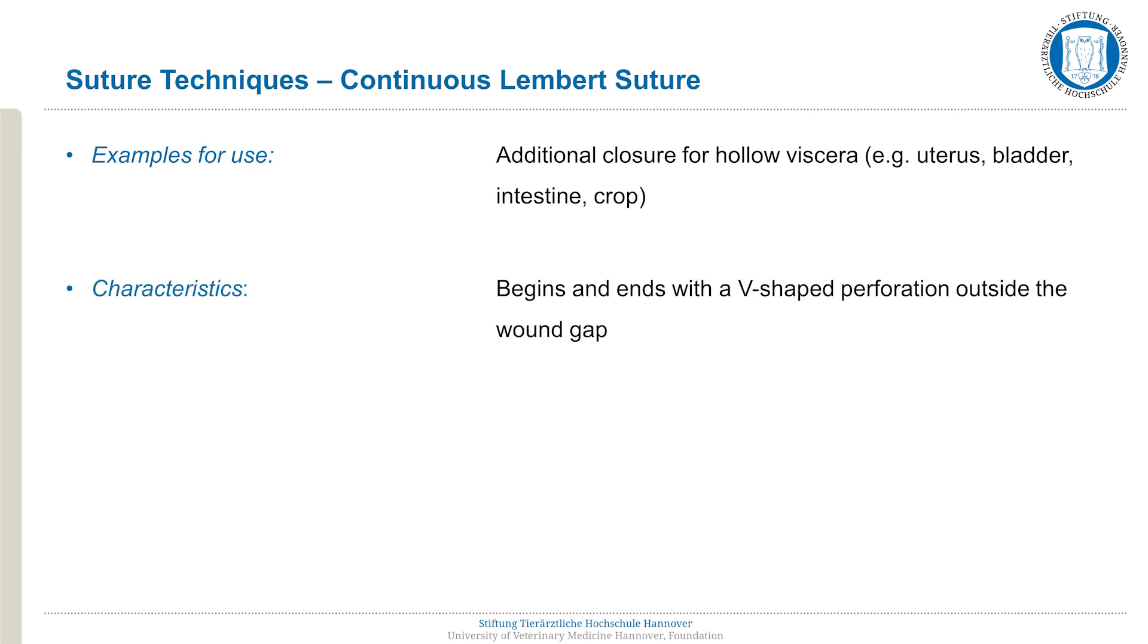This suture pattern both begins and ends in a V-shaped perforation outside of the wound gap. A Lembert suture is always placed in two rows, which means that there are two sutures above one another.